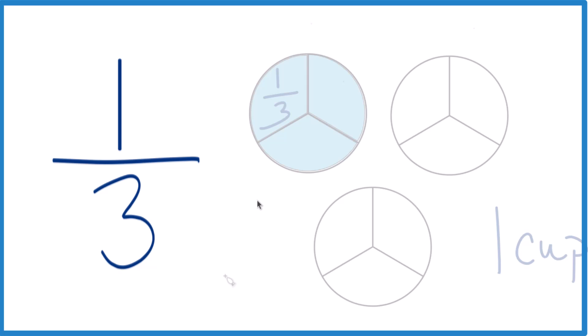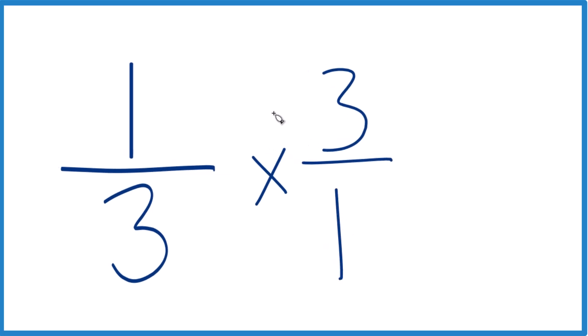Let's do it the math way, though. Let's multiply one-third times three, and I'm going to call it three over one. Three divided by one is still three, but now everything lines up, because when we multiply fractions, we multiply the numerators and then the denominators.